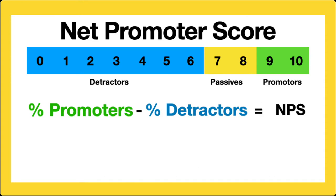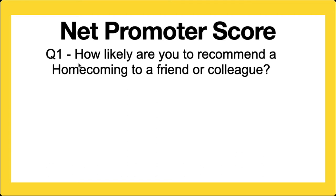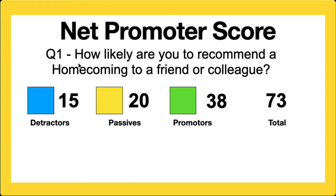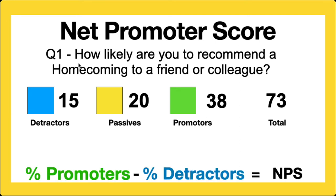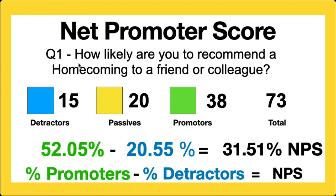Here's an example: I asked my students how likely they are to recommend homecoming to a friend or colleague. I got 72 responses — 15 were detractors, 20 were passives, and 38 were promoters. Working out the percentages: 52% are promoters, 20.55% are detractors, giving us an NPS score of 31.51%.